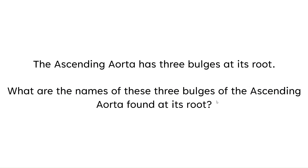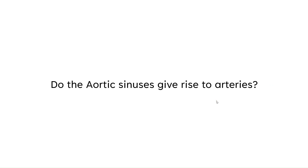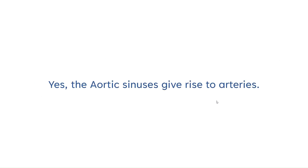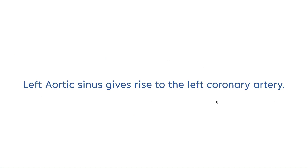What are the names of the three bulges of the ascending aorta found at its root? The three bulges of the ascending aorta found at its root are: one, the left aortic sinus; two, the right aortic sinus; and three, the posterior aortic sinus. Do the aortic sinuses give rise to arteries? Yes, the aortic sinuses give rise to arteries.